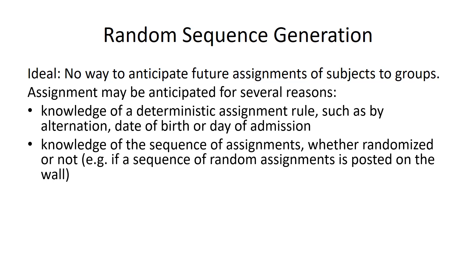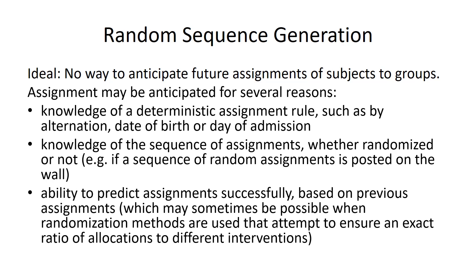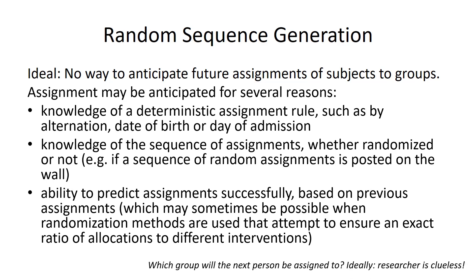The knowledge of sequence of assignments, whether randomized or not — say if a sequence of random assignments is posted on a wall and you're going out into the lobby to grab the next patient — you're going to know if they're going to be in the treatment or control group. Also, it's a problem if you can predict assignments successfully based on previous assignments, which may sometimes be possible when randomization methods attempt to ensure an exact ratio of allocations. Say we know that we need a male over the age of 65 who is black — it's going to be pretty easy to tell who the next person is going to be. Ideally, the researcher is clueless about which group the next person will be assigned to.